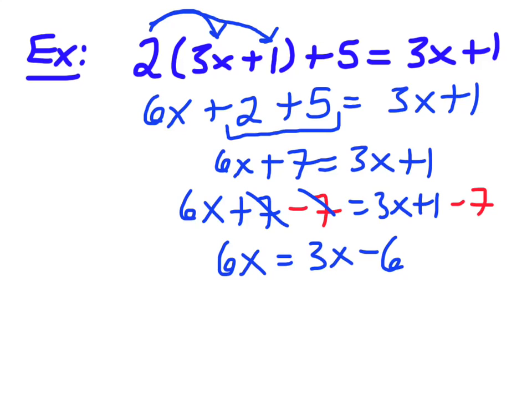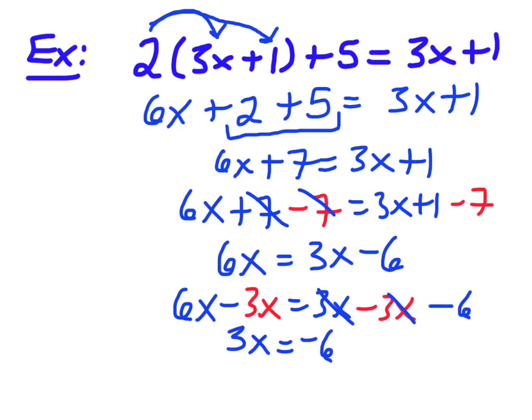6x is equal to 3x minus 6. So, now I'm going to get rid of the 3x there. So, it becomes 6x minus 3x is equal to 3x minus 3x minus 6. So, cancel, cancel. So, we have 3x is equal to negative 6. So, again, I need to divide. I got 3 times x. So, I'm going to undo that. I have to divide. So, divide by 3.